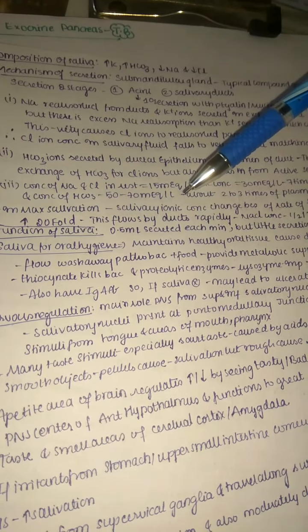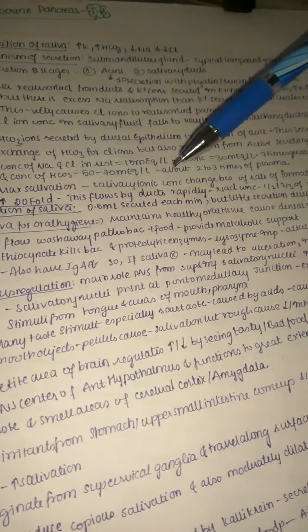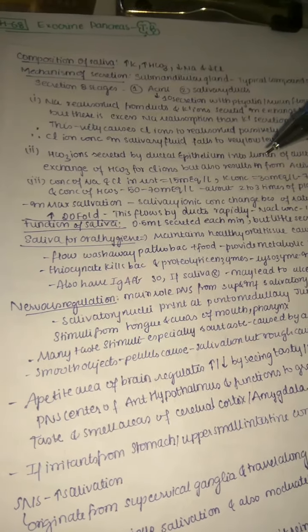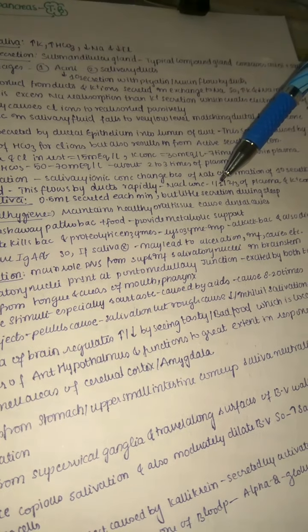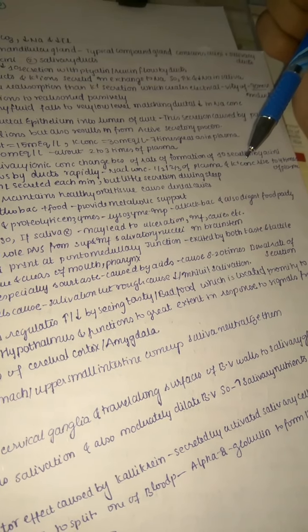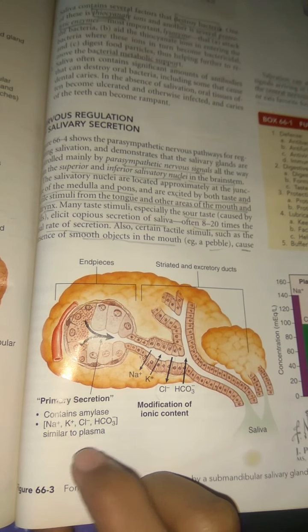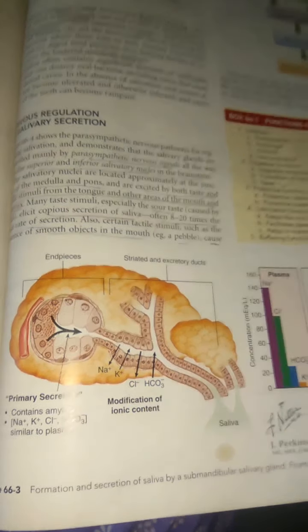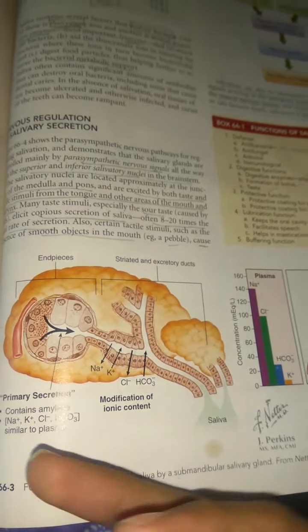During maximum salivation, the salivary ionic concentration changes because the rate of primary secretion by the acinus increases up to 20-fold. This flows rapidly through ducts, so sodium and chloride concentrations become half to two-thirds of plasma, and potassium concentration rises to four times that of plasma. In summary, primary secretion contains amylase, sodium, potassium, chloride, and bicarbonate similar to plasma, but in the ducts this ionic exchange occurs, resulting in saliva with high potassium and bicarbonate but very low chloride and sodium.